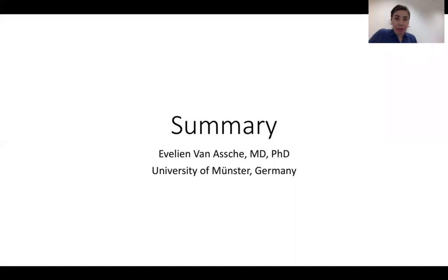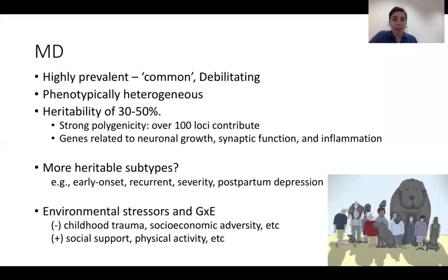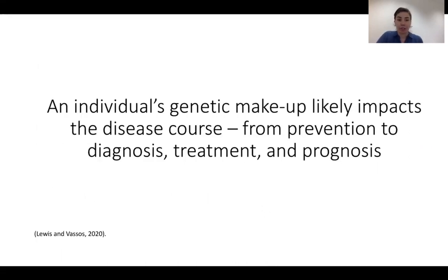Hello everyone, my name is Evelyn Vanassen, I'm a psychiatrist currently working in Germany, and I have the pleasure to conclude this presentation with a short summary. We've been discussing depression, which is a highly prevalent, common, and very debilitating disorder. It is phenotypically very heterogeneous and has a heritability of around 30 to 50%. Studies have shown that there is strong polygenicity, with over 100 loci contributing to disorder risk related to neuronal growth, synaptic function, and inflammation. There are subtypes that are more heritable, including early onset depression and postpartum depression, and environmental factors such as childhood trauma, socioeconomic adversity, social support, and physical activity all play important roles.